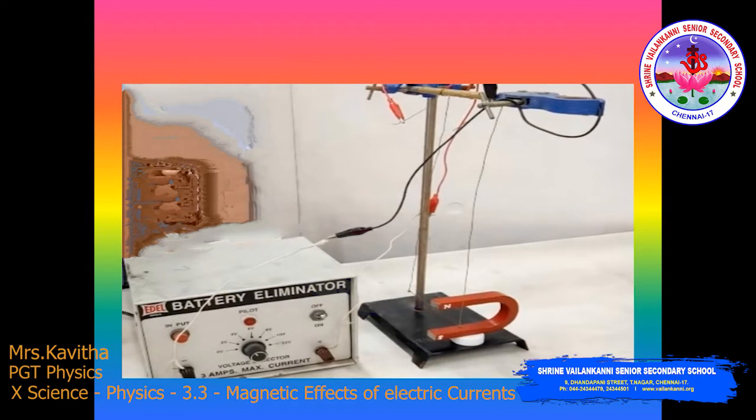The rod is displaced towards the left. Now reverse the direction of the current flowing through the rod by changing the polarities — you will get the displacement towards the right. If you change the poles of the magnet, the direction of the displacement will also get changed.